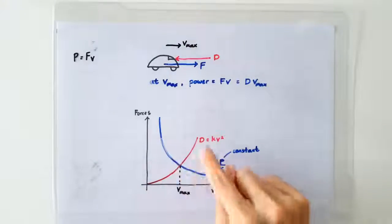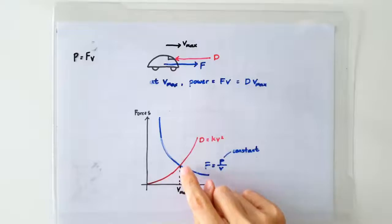Clearly, where the two lines intersect is where we get the maximum speed, because that's where the drag force and the forward thrust equal.